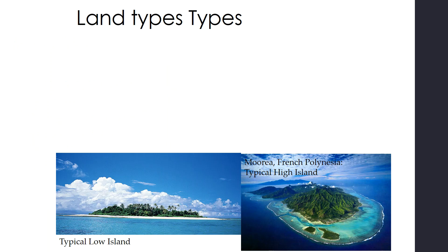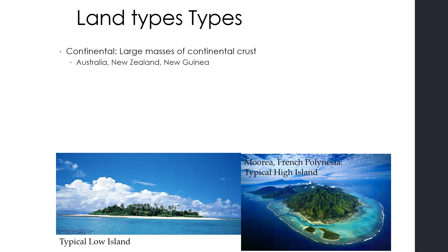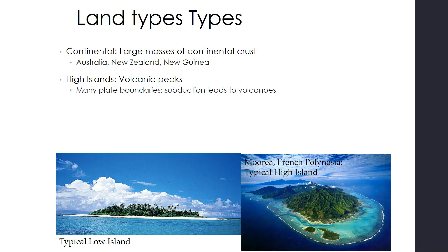We have a few different land types. The continental, where we have large masses of continental crust, which is Australia, New Zealand, and New Guinea. Then we have high islands, which are large volcanic peaks — we can see Morea, which is in French Polynesia, a typical high island. There are many plate boundaries in the region, so lots of subduction leading to lots of volcanoes, some active and some not. Then we have low islands which are made of coral, called atolls, and we'll learn more about atolls a little bit later in the lecture.